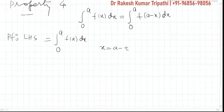And we replace x by a minus t, means we substitute x is equal to a minus t. dx by dt will be minus 1. This implies dx is equal to minus dt.